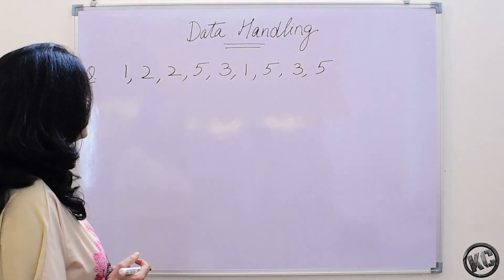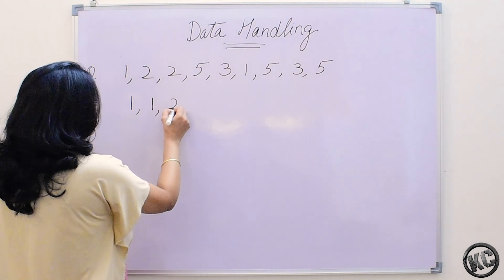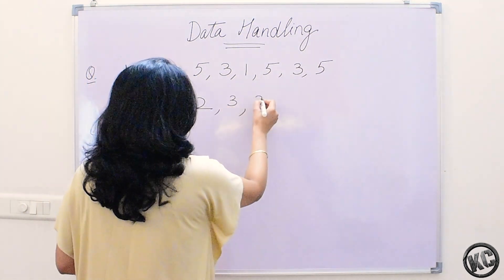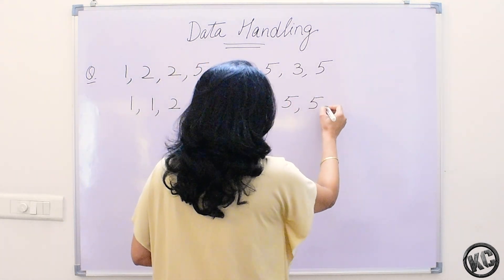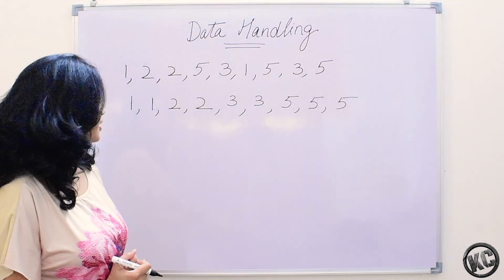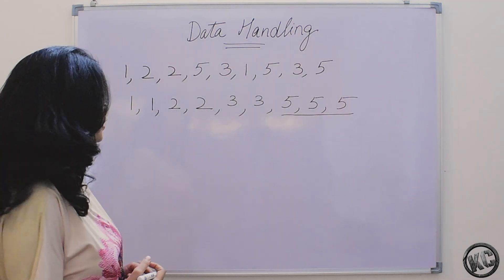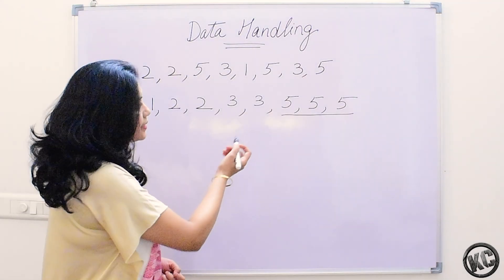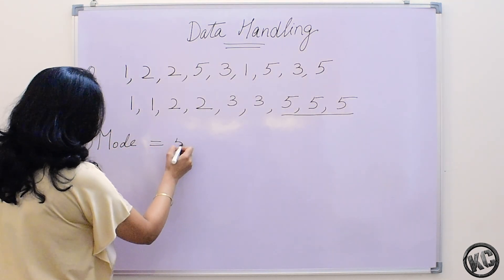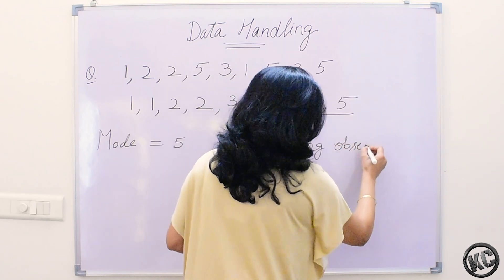We are given some data. First let us arrange it in ascending order, placing the same digits together. Here we have arranged this data in increasing order. We see that number 5 is occurring more frequently — more number of times in our data. So this number 5 is the mode of the data. Mode is equal to 5, which is the most occurring observation.